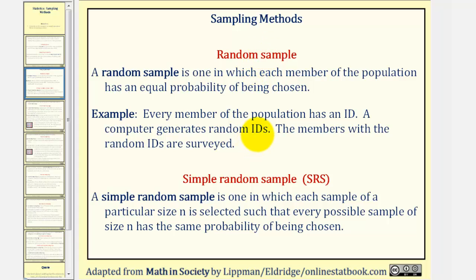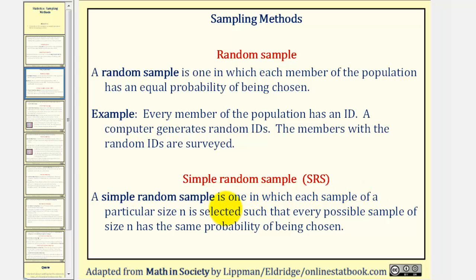Related to random sample is the simple random sample, also known as SRS. A simple random sample is one in which each sample of a particular size n is selected, such that every possible sample of size n has the same probability of being chosen. For a random sample we're selecting individual members of the population, but for a simple random sample we're selecting a sample of size n.